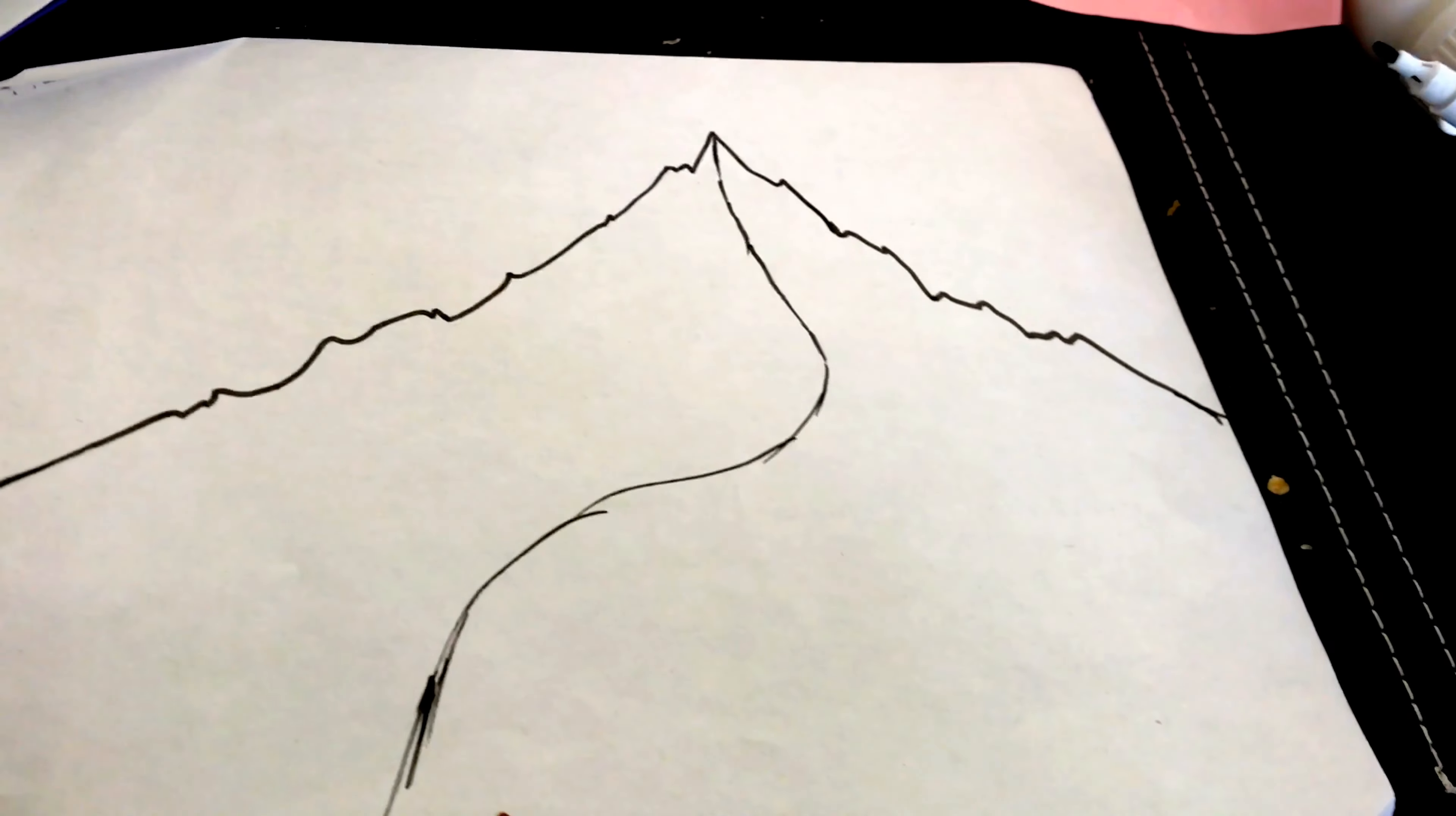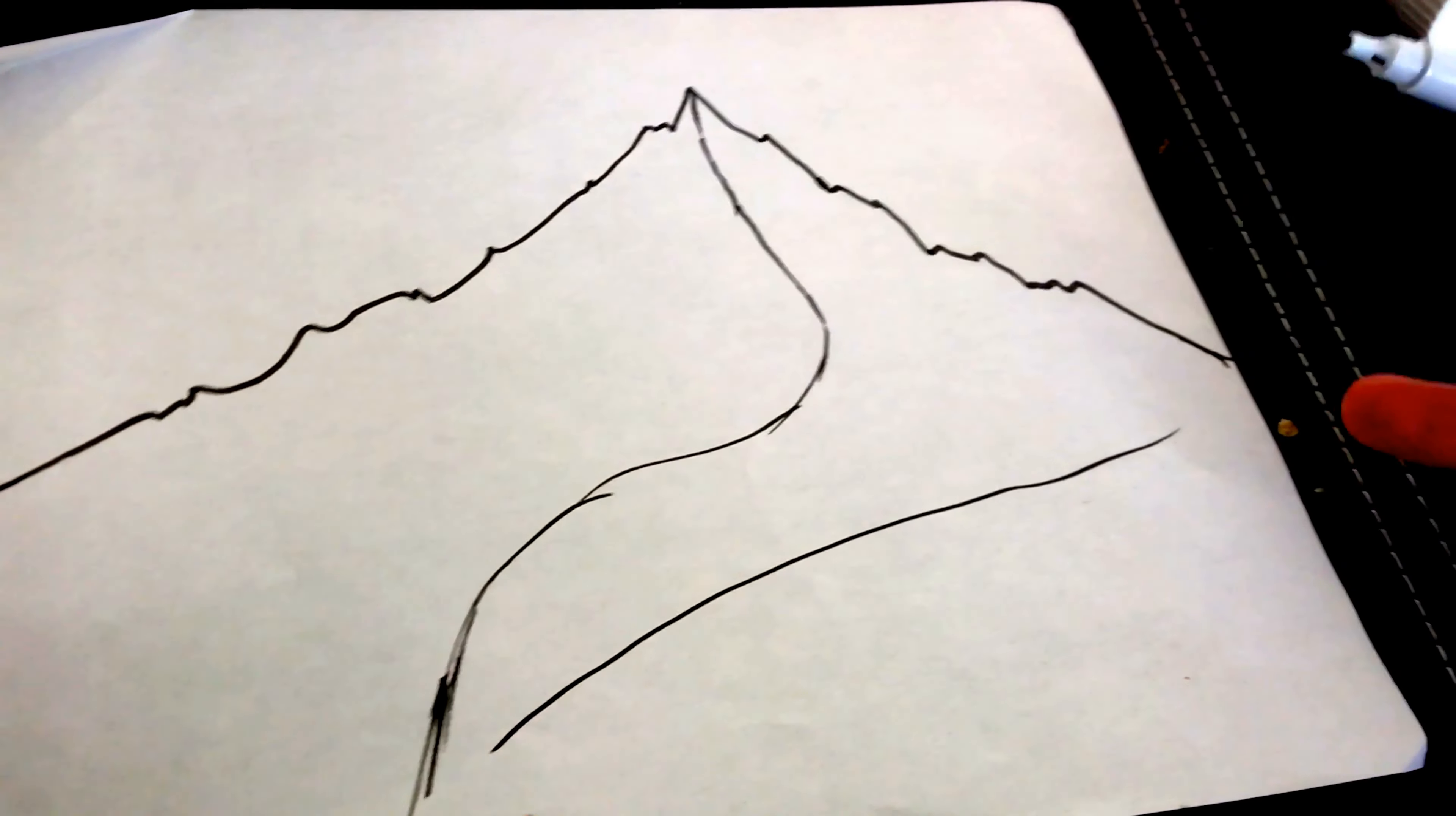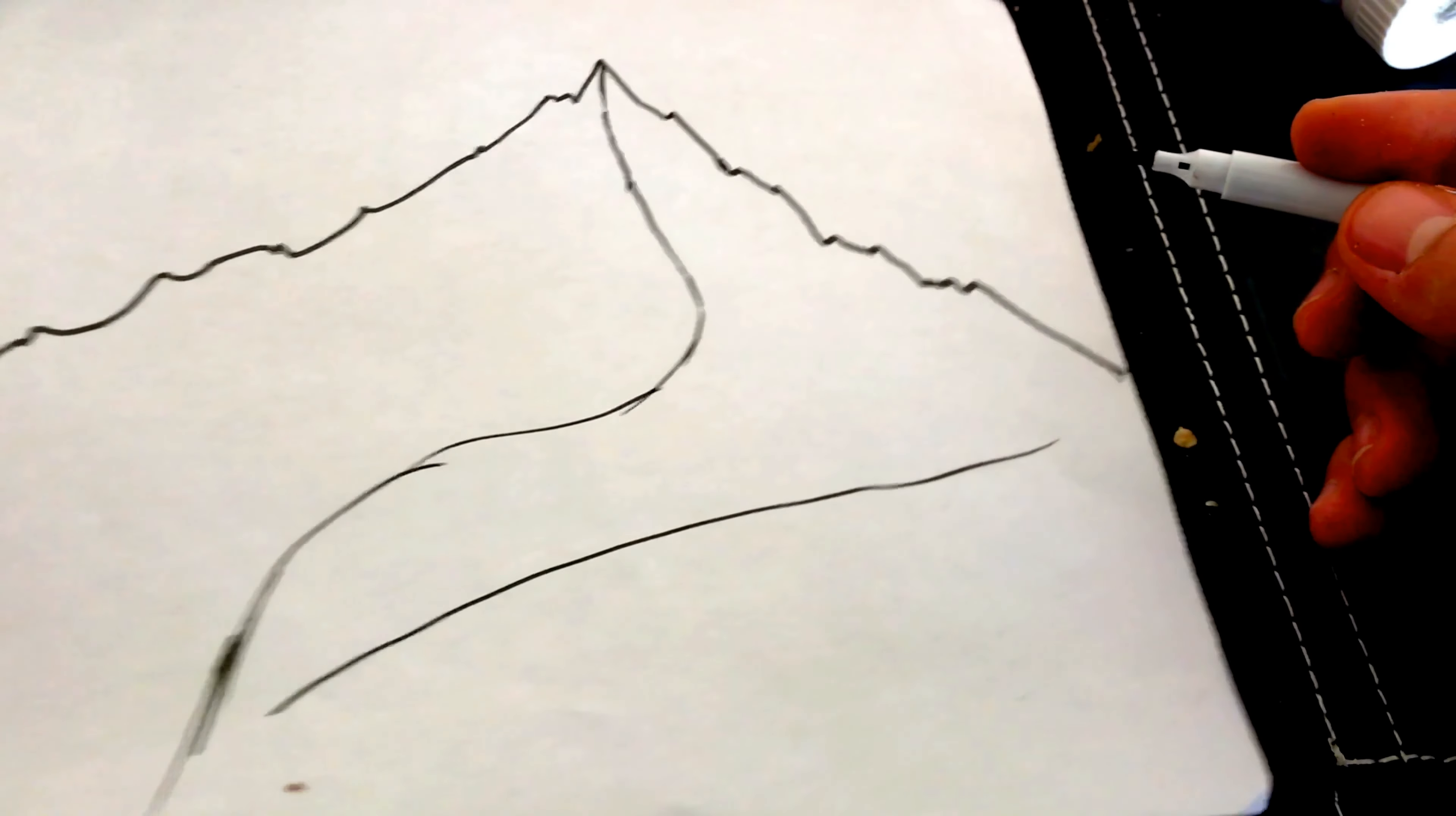All right, so I kind of did a squiggly line right in the middle of the mountain. It might not make sense right now, but maybe we'll see. We're gonna choose for a mountain, we need to make a choice what side is the light going to be on. For this mountain I'm gonna say the lights coming in from this side, so this is gonna be a lighter side.